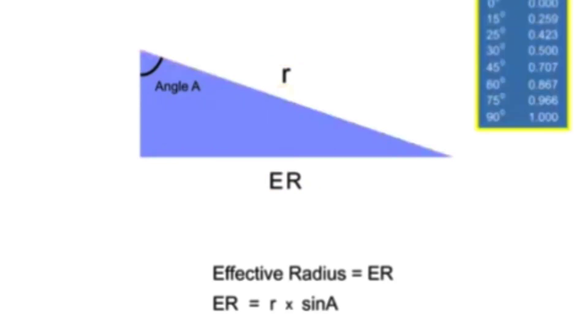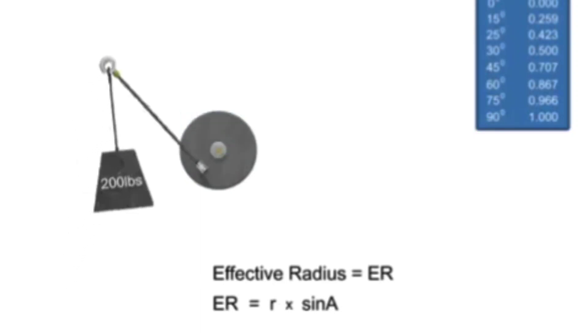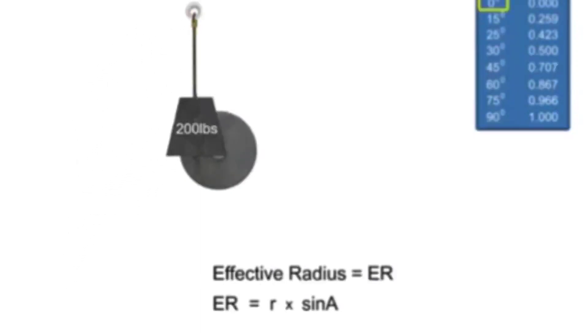Sine has values that vary from 0 to 1 for angles between 0 and 90 degrees. When the lever arm is in the vertical position, the angle between the rope and lever arm is 0. The sine of angle 0 is also 0.